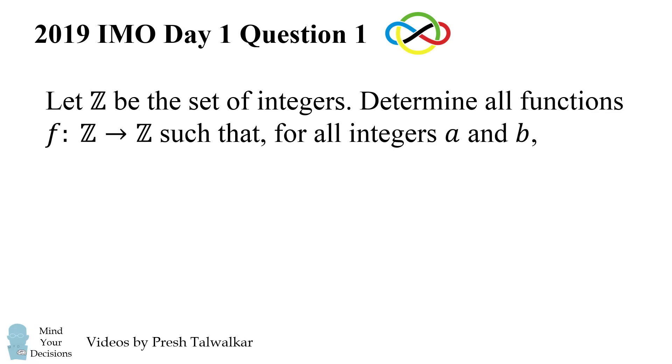Let Z be the set of integers. Determine all functions f going from Z to Z such that for all integers a and b, f of 2a plus 2 times f of b is equal to f of f of a plus b.